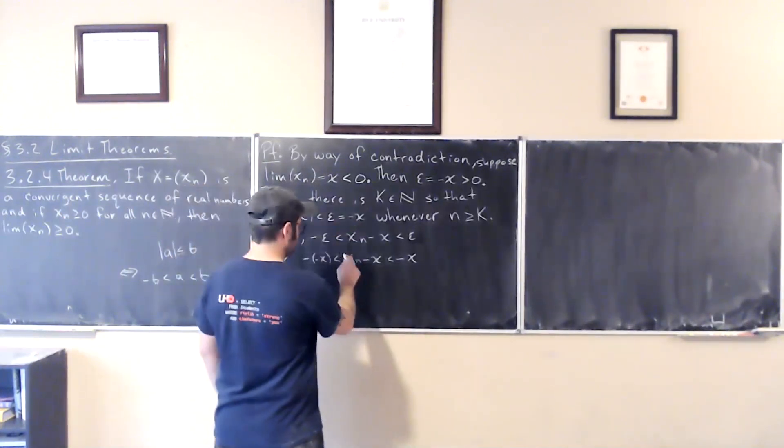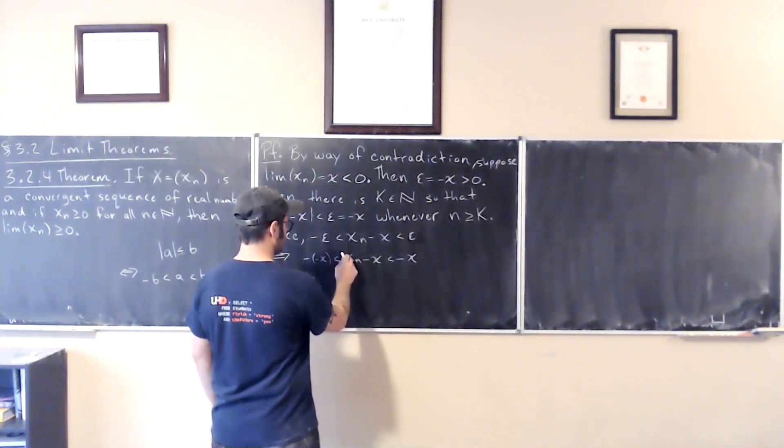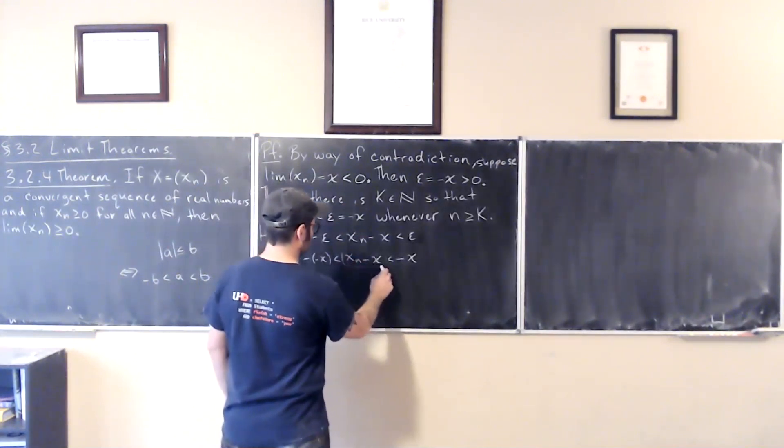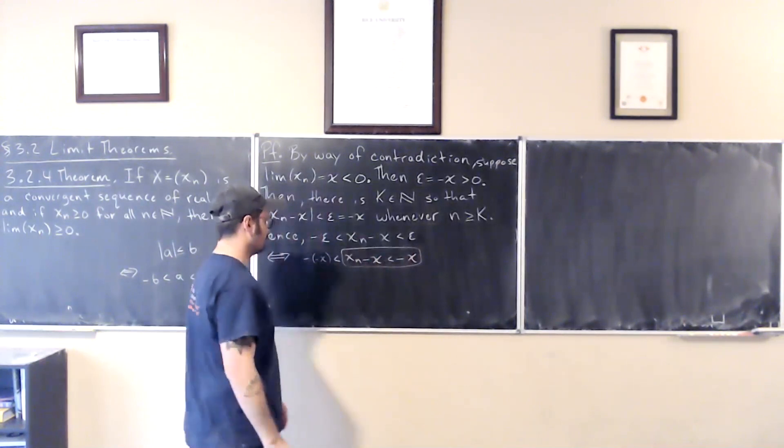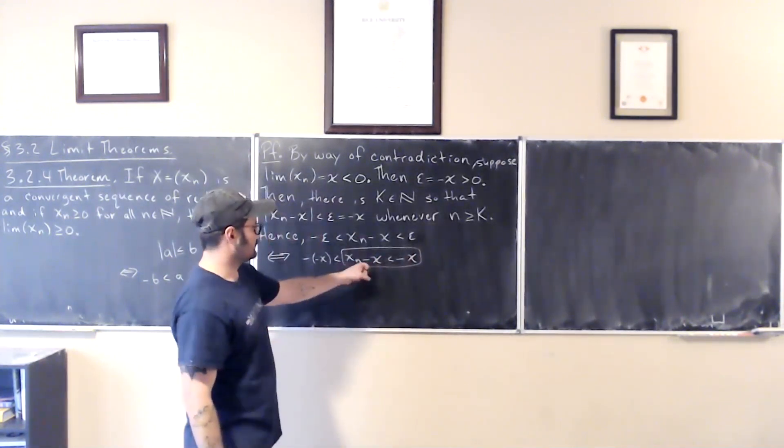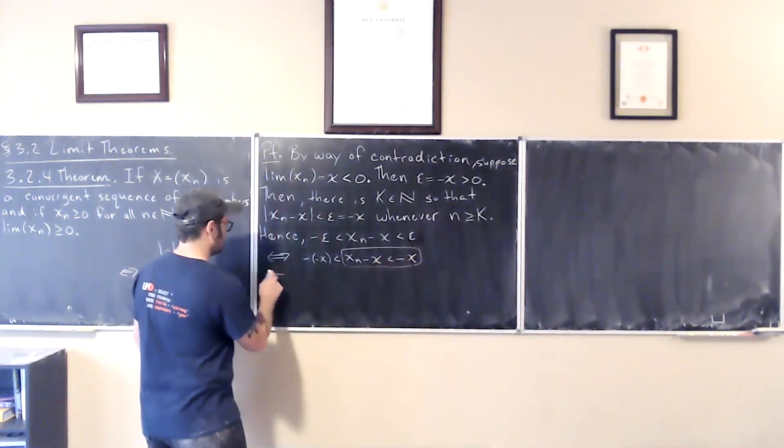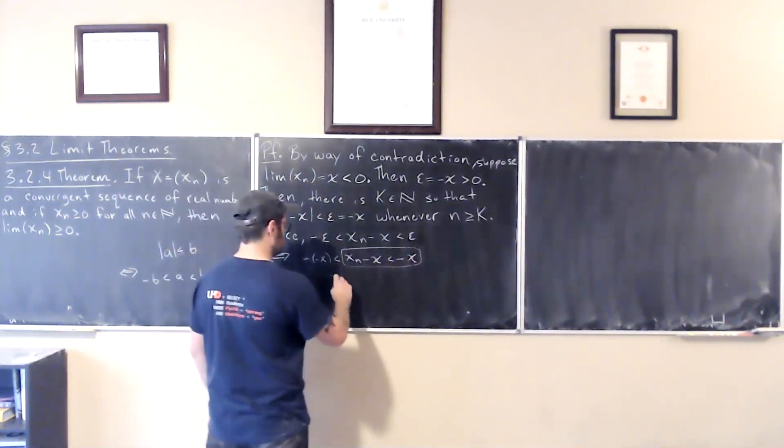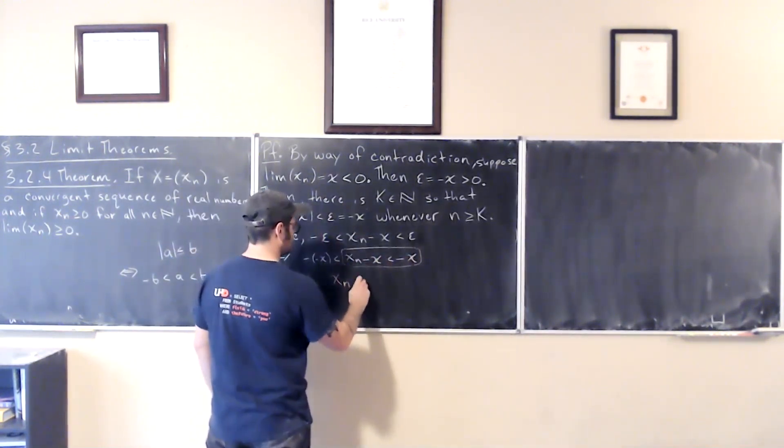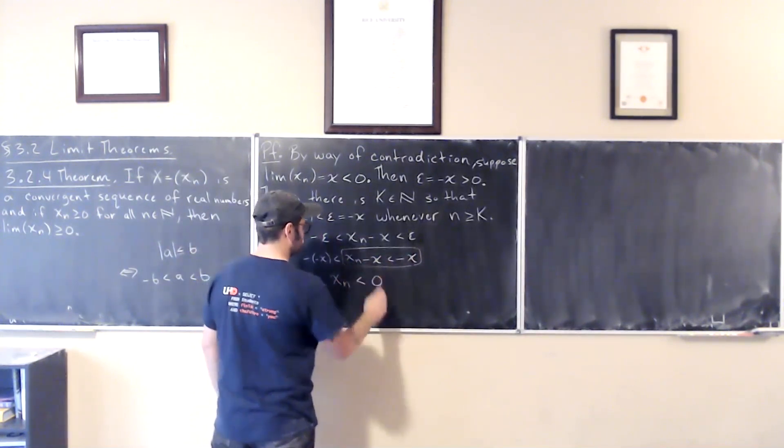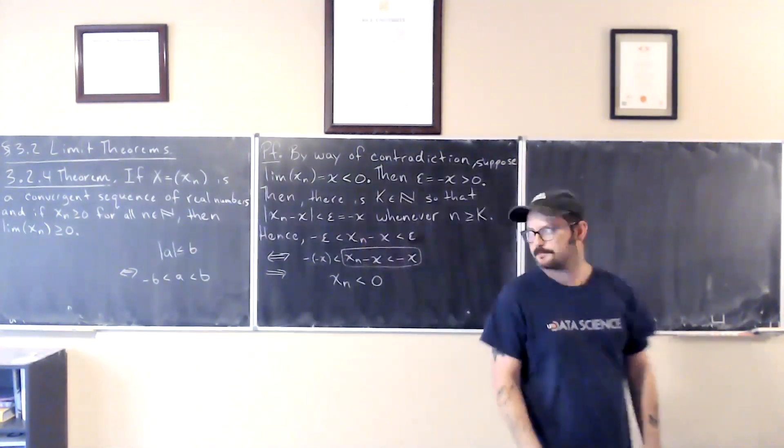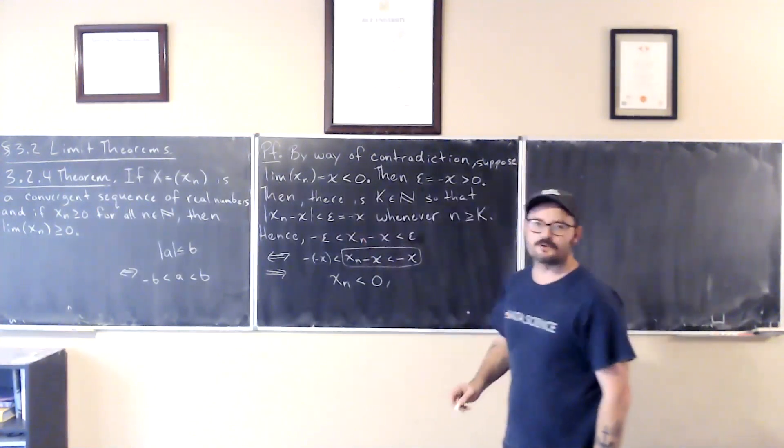And this is like saying, I just replaced epsilon by what it was. But look right here: x_n minus x is at most minus x. So this implies that x_n is less than zero. We just add x to both sides.